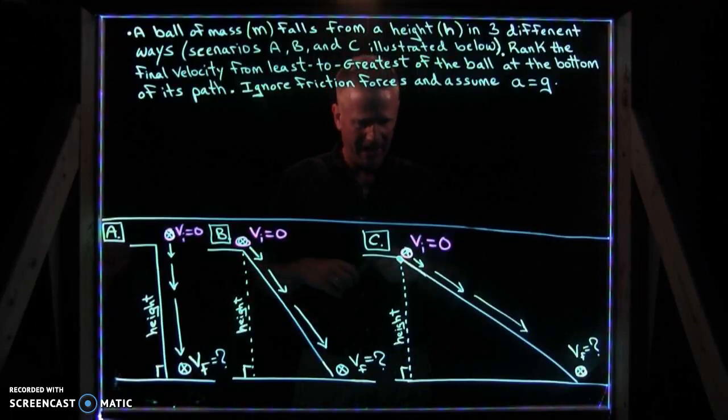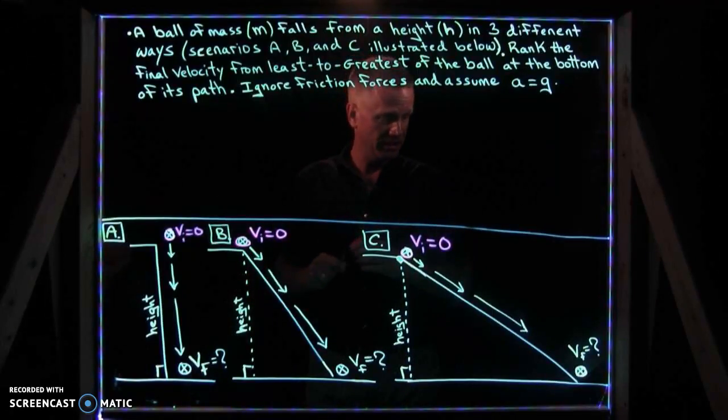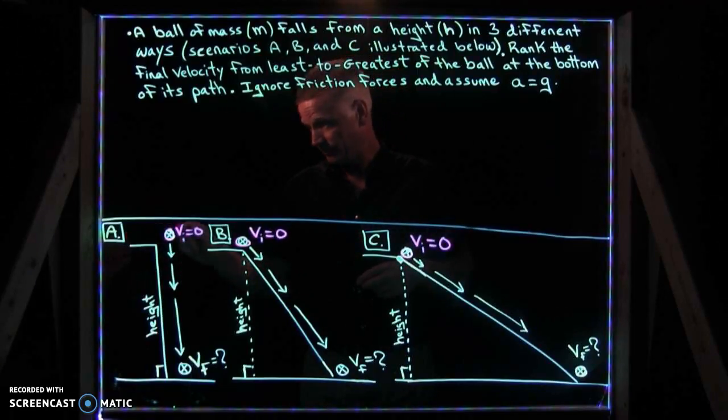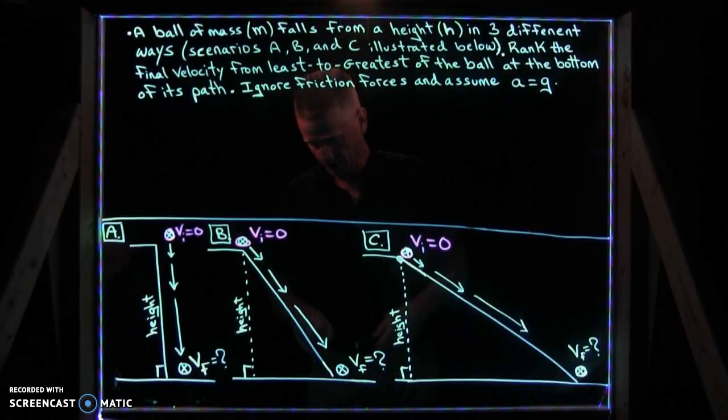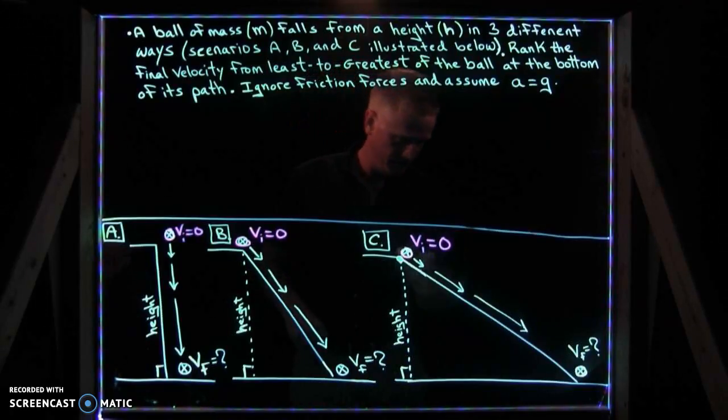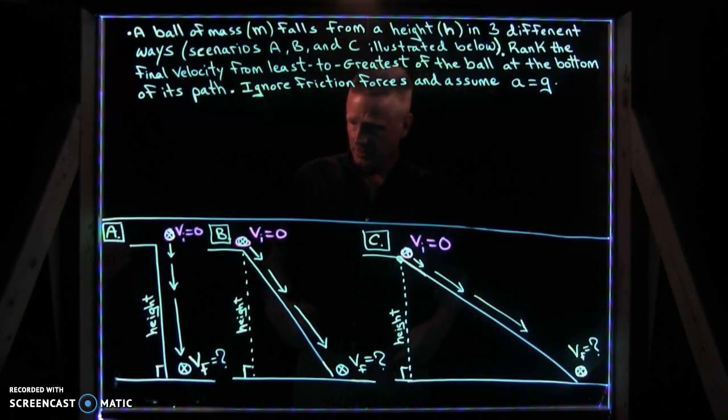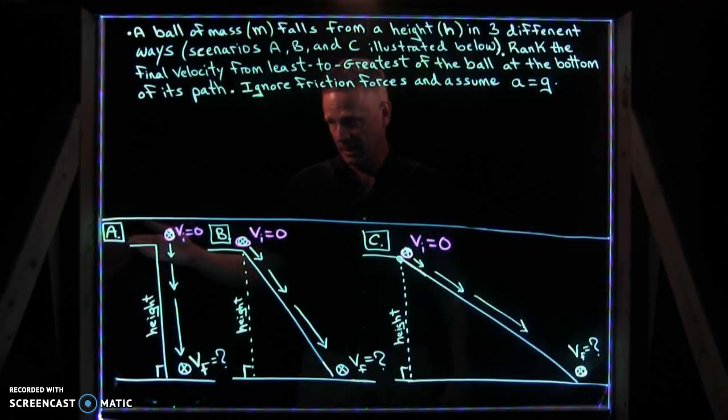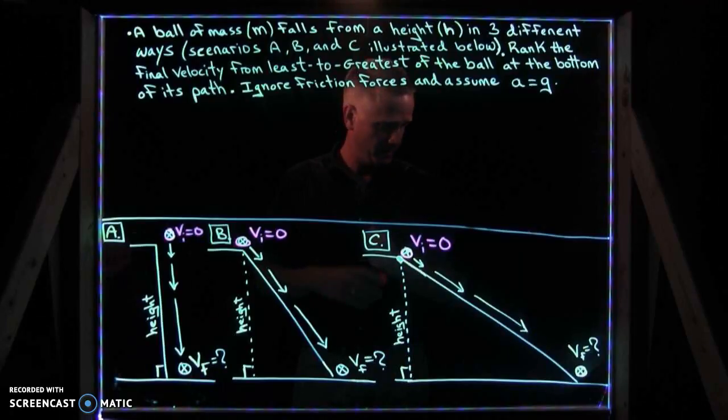Which case is the path the shortest and which case is the path the longest to the ball? I think that's pretty obvious. Scenario A falls vertically, the shortest path, a little longer in scenario B. But in scenario C, it's the longest path. So you could rank the distance the ball travels in all three cases, least in A and greatest in scenario C.